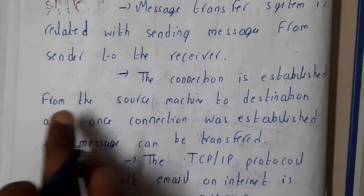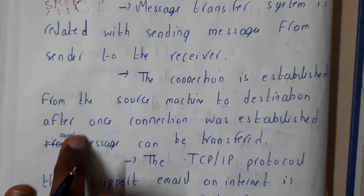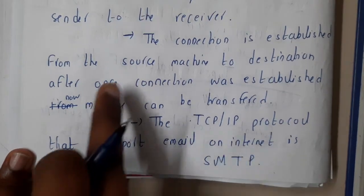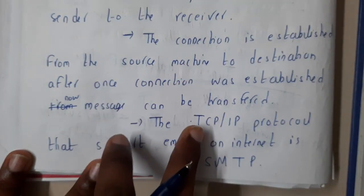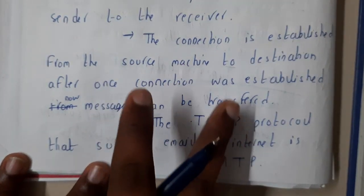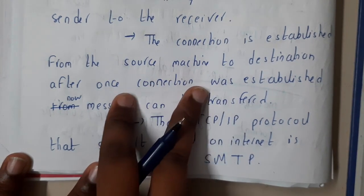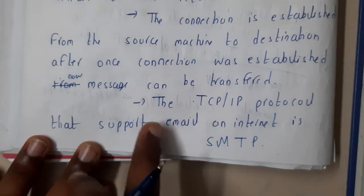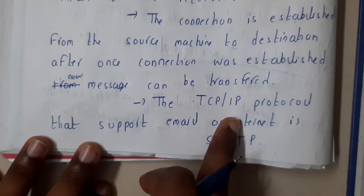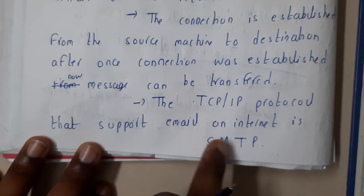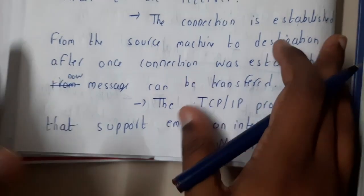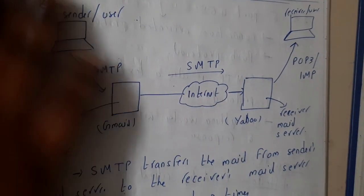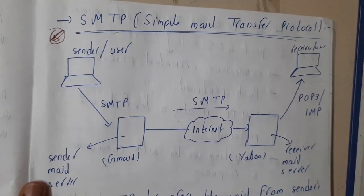The connection is established from the source machine to the destination machine. Once the connection is established, the message can be transferred. We have three steps: connection establishment, sending the message, and connection termination. The TCP/IP protocol that supports email is SMTP.